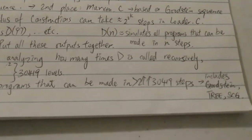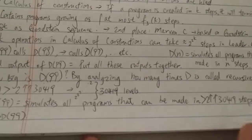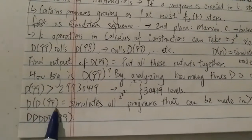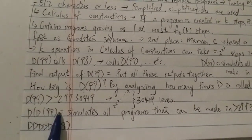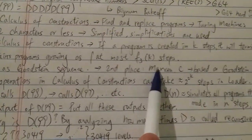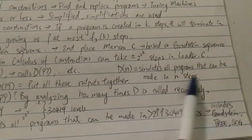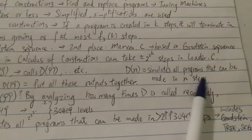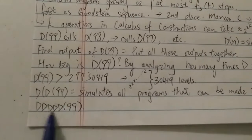The number of atoms in the observable universe is only 10^80. The number of steps d(d(99)) simulates is way more than that — and that's only with two d's. Therefore, just two d's is already way way bigger than the second place entry which is based on the Goodstein sequence. This is what the d functions mean in simplified form. Now, two d's is already enormous — imagine what five d's does.